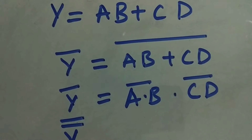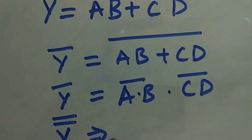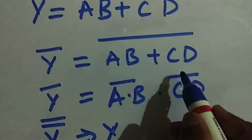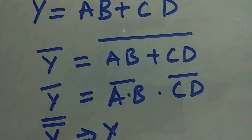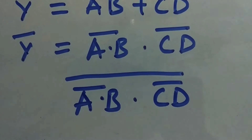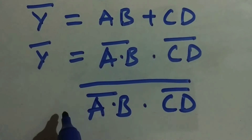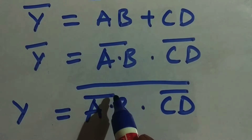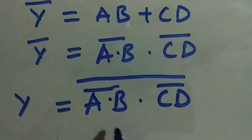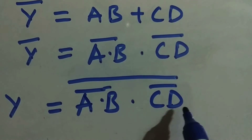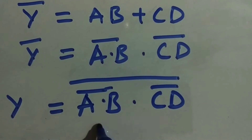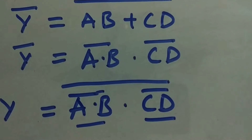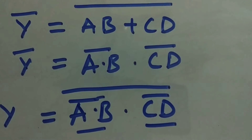But this is Y bar. When we apply one more complement to Y bar, it becomes Y double complement, which equals Y. So we apply one more complement over the whole expression to get Y back. Now it looks like NAND gates: A dot B whole bar is a NAND gate, C dot D whole bar is a NAND gate, and combining those two with a NAND gives a third NAND gate. So we require a total of three NAND gates.